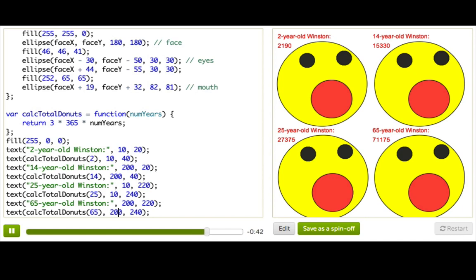But now that we've made it into a function, it's really easy for us to change parts of it. Like, if Winston sees this and says, whoa, that's a lot. What if I just ate one a day? Okay, well, we can just go here, change this one number, and see everything change. So that's 23,000. Still a lot.